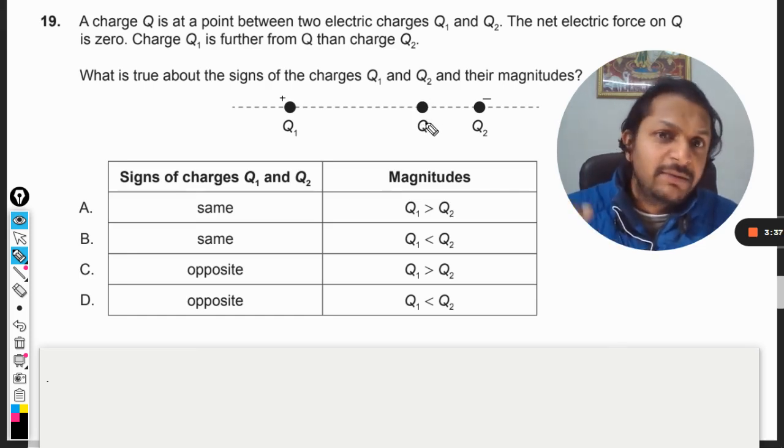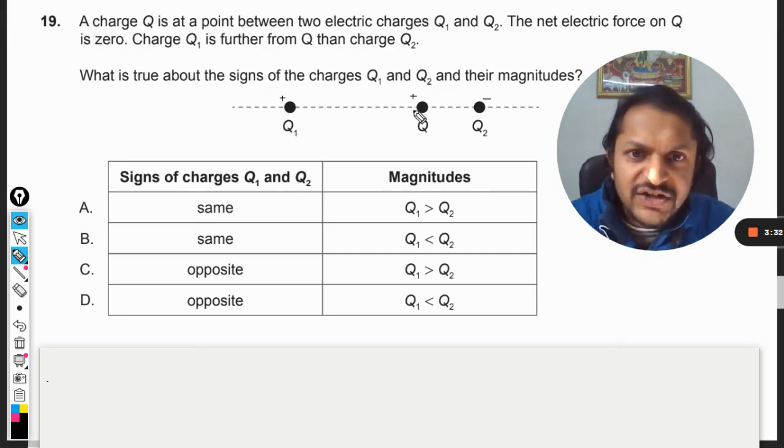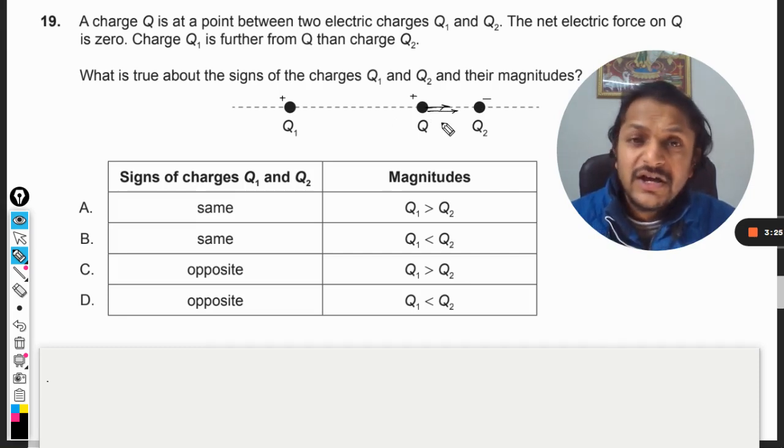They cannot. It's got to have a sign - it might be positive or negative, just assume. Let us say it is positive. These charges will be having repulsion here, and this negative charge will be attracting this charge towards itself.